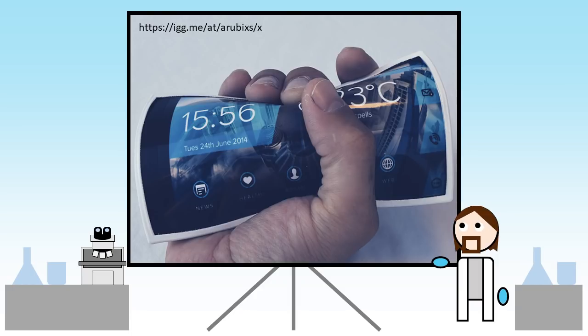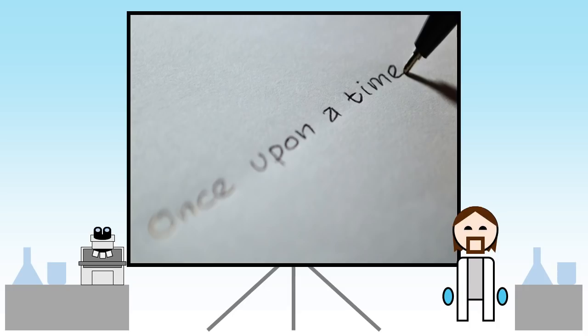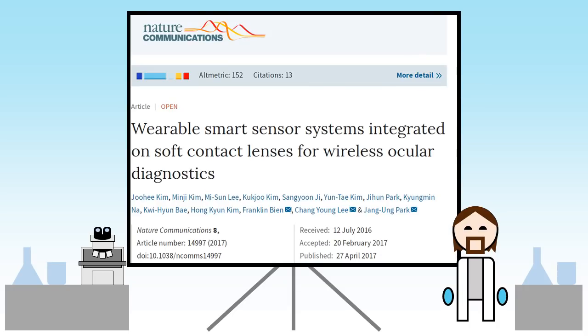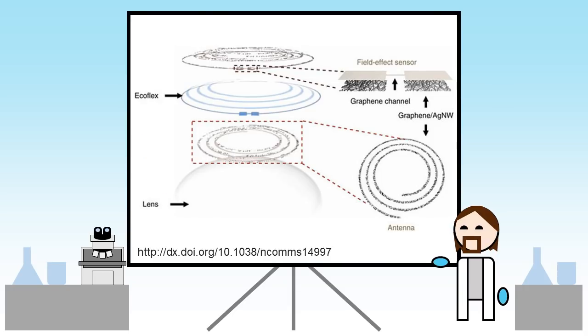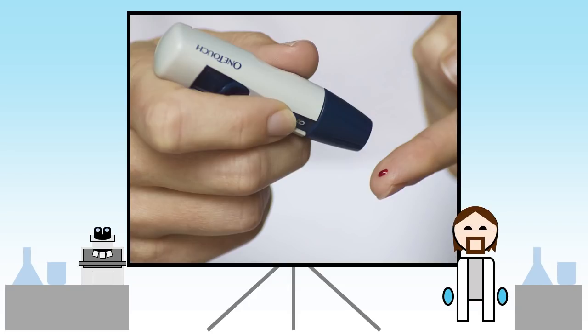Combine this with a flexible display and you're most of the way to that rollable smartphone you never knew you wanted. But that is only the beginning. A recent article published in Nature Communications describes how silver nanowires and graphene can be added into contact lenses to produce an invisible sensor that can measure blood sugar with an RFID reader.